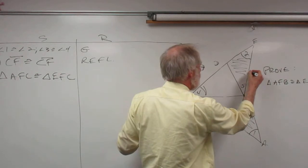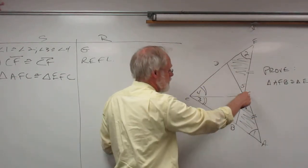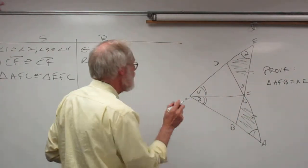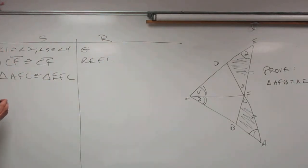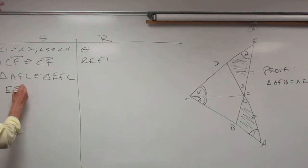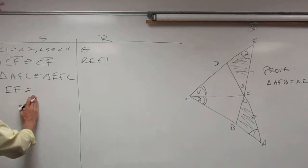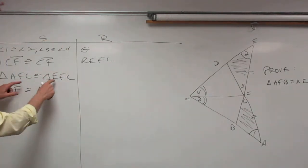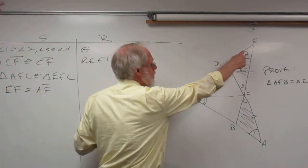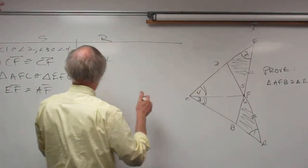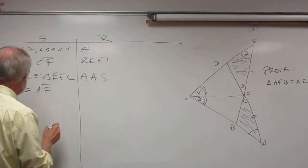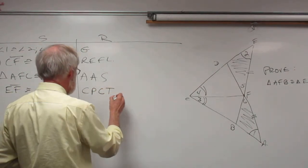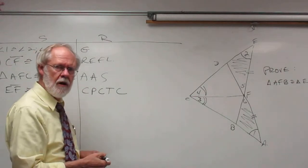Now let's pluck out the sides we need — this one congruent to this one. Those are parts of the big triangles but also parts of the smaller ones. Step four: EF is congruent to AF. The reason for the big triangle congruence was angle-angle-side (AAS).